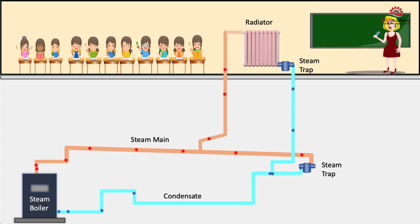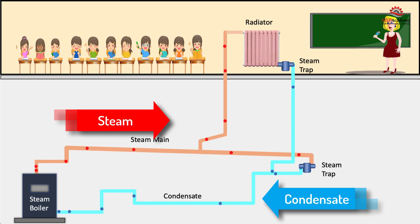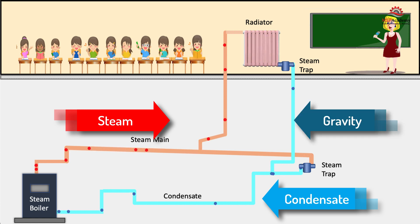Condensate from the steam condensing needs to be brought back to the system for reuse unless the steam is used for a process. The condensate can be brought back by gravity or with the use of a condensate return pump.